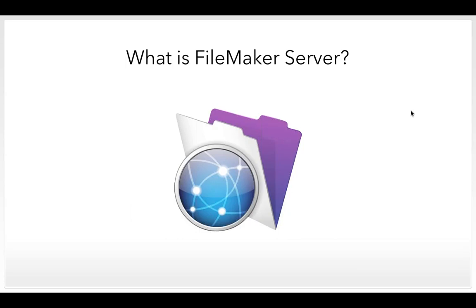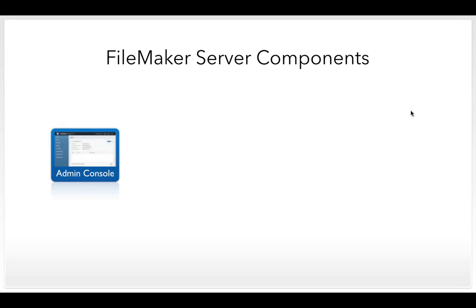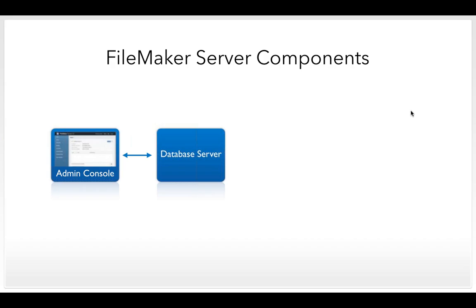Normally this computer is stored at a secure location, either in the office or off-site, in a room dedicated for IT equipment — but it's just a computer. FileMaker Server isn't just one piece of software; it's multiple components that work together. The admin console is a web application you access from a browser that lets you configure and set up FileMaker Server. The database server component is responsible for hosting database files and making them available to FileMaker Pro, FileMaker Go, and FileMaker WebDirect clients.